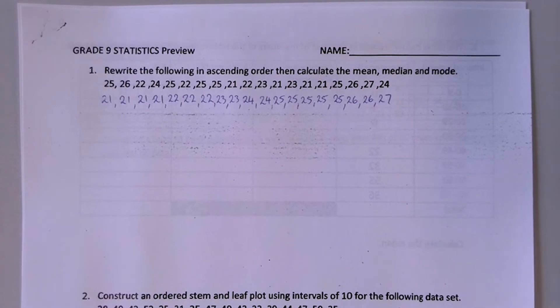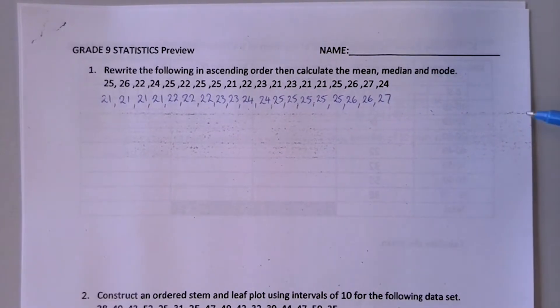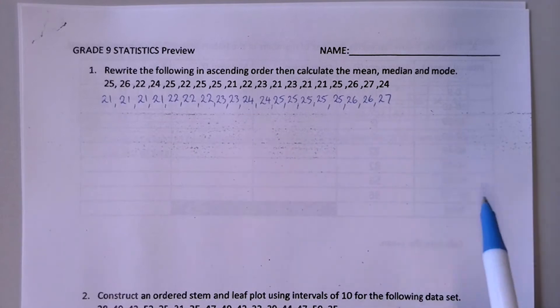Question 1 is a bit of a revision from Year 8. This one's asking you to go back and write all the numbers in order to find the mean, median and mode. So I've gone ahead before I started the video and put them in order so you don't have to watch me do that.